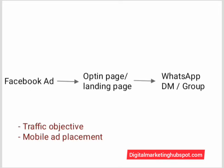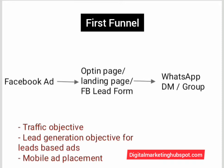The first funnel is quite simple. From your Facebook ad, you send your target audience to an opt-in page or landing page. From this landing page, they will click on a button that takes them to WhatsApp — either your WhatsApp DM or your WhatsApp group — or they enter their details on the opt-in page and are then redirected to your WhatsApp or WhatsApp group.